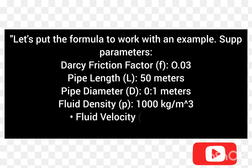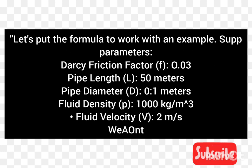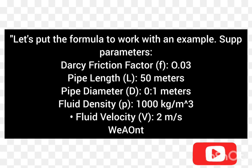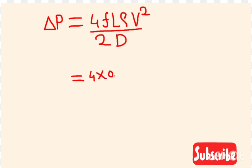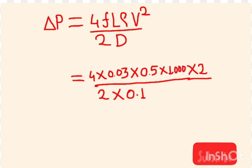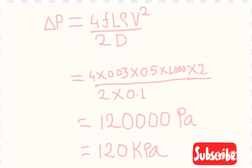Let's put the formula to work with an example. Suppose we have a pipe with the following parameters: Darcy friction factor f = 0.03, pipe length = 50 meters, pipe diameter = 0.1 meter, fluid density = 1,000 kg/m³, and fluid velocity = 2 m/s. We want to calculate the pressure drop from point A to point B. By putting these values into the Darcy equation, the final answer is 120 kPa.